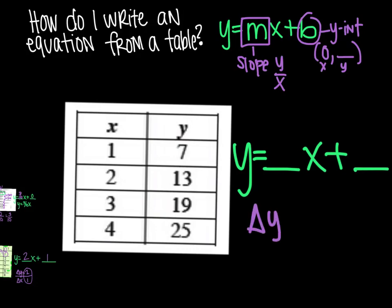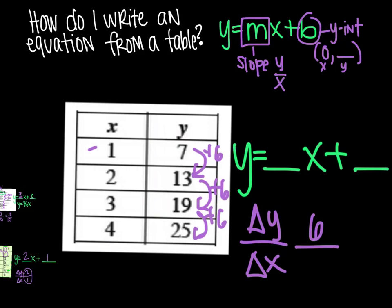First thing, change in y over change in x. Change in y as I go each time, I'm adding 6. So that's my change in y. 6 over my change in x is increasing by 1 every time. So it's going to be 6 over 1, which is, in fact, just 6.